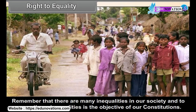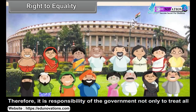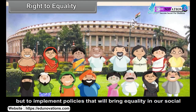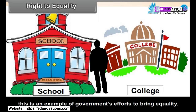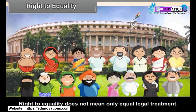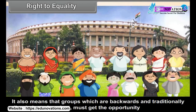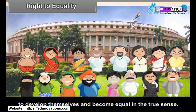Remember that there are many inequalities in our society, and to remove those inequalities is the objective of the Constitution. Therefore, it is the responsibility of the government not only to treat all persons equally, but to implement policies that will bring equality in social relations. You may have heard about reservation of seats in school and college admissions for women or persons of weaker sections — this is an example of government's efforts to bring equality. Right to equality does not mean only equal legal treatment. It also means that groups which are backward and traditionally discriminated against must get the opportunity to develop themselves and become equal in the true sense. Thus, right to equality puts a responsibility on the government to remove injustice and inequality.